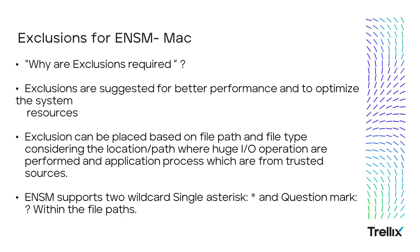Today's topic is exclusions for Mac. Why do we require exclusions? Certain applications constantly write data to disk, which creates performance issues. It is necessary to create exclusions to streamline the performance of the application and the system. Exclusions can be placed based on file path, file type, and process from trusted application sources. Endpoint security for Mac has two wildcards: single asterisk, which represents any number of folders and characters in a string, and question mark, which replaces a single character in a file name, directory name, or file type.